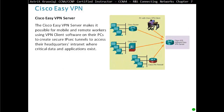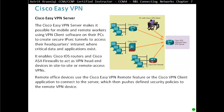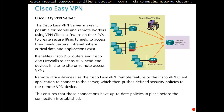The Cisco Easy VPN Server makes it possible for mobile and remote workers using VPN client software to create a secure IPSec tunnel to access the headquarters intranet where critical data and applications exist. It enables Cisco IOS routers and Cisco ASA firewalls to act as a VPN headend device. Remote office devices use the Cisco Easy VPN Remote features or the Cisco VPN Client application to connect to the server, which then pushes centrally defined security policies to the remote VPN devices, ensuring up-to-date policies are in place before the connection is established.